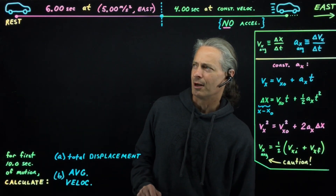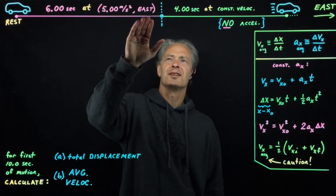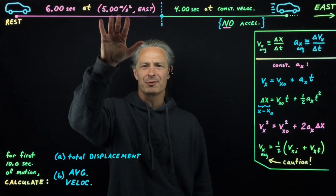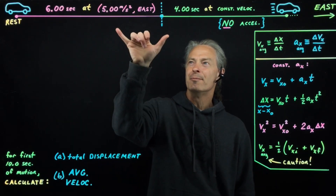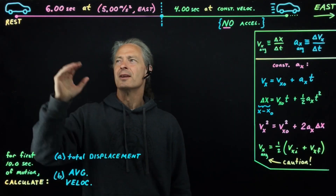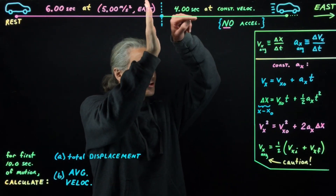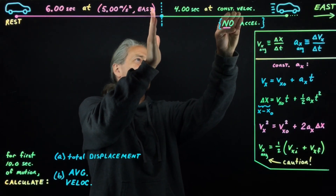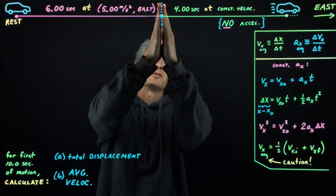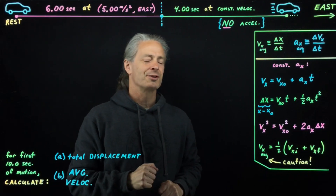Here's the problem. Imagine that a car starts from rest and then accelerates to the east with an acceleration of magnitude five meters per second per second, and it maintains this acceleration for the first six seconds of motion. Then, at the end of the first six seconds of motion, the car continues traveling to the east, but now with a constant velocity equal to whatever velocity it had at the end of the first six seconds, and then it maintains this constant velocity for four seconds.